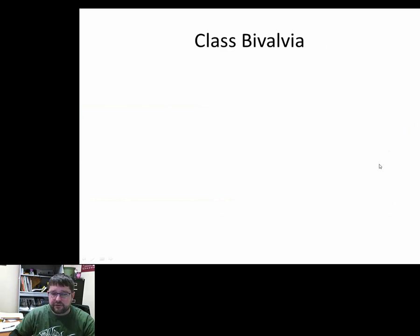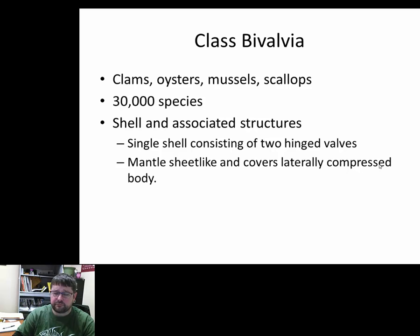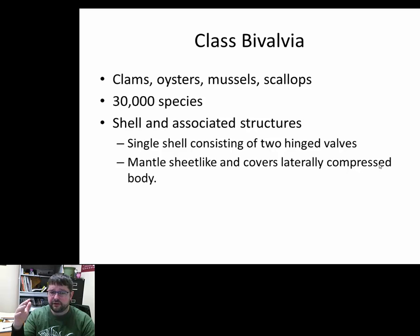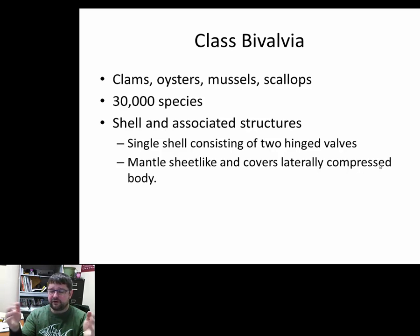Bivalves consist of clams, oysters, mussels, and scallops. Similar to Gastropoda, over 30,000 species have been named and there are probably plenty yet to be found — a very species-rich, very successful group. They differ from Gastropoda in that the class name gives you an idea of their unique feature: they have a shell excreted by the mantle, but the shell has two hinges — that's where 'bivalve' comes in. The visceral mass is completely enclosed by the mantle and shell, though locomotion can still occur via the foot.